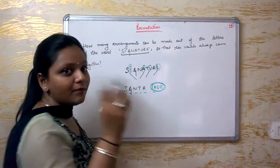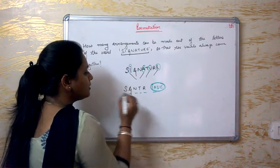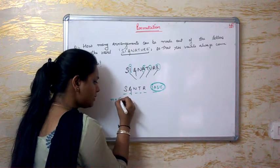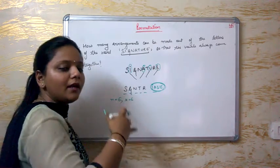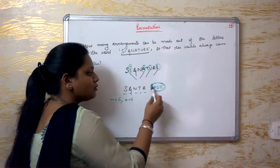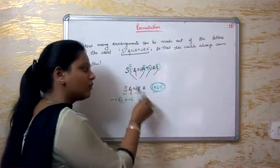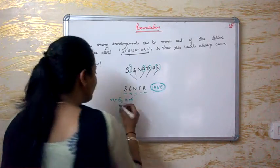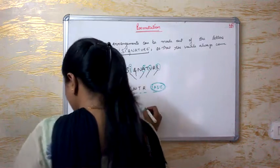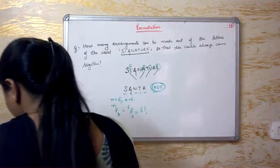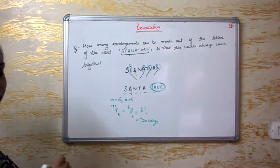Because all vowels have to stay together, they cannot be separate, so I treat them as one unit. So now N is 6 (5 consonants + 1 bundle) and R is also 6. My formula is NPR = 6P6 = 6 factorial = 720.